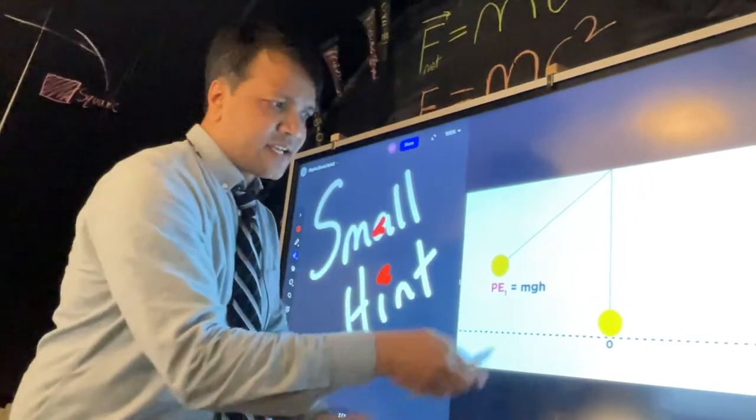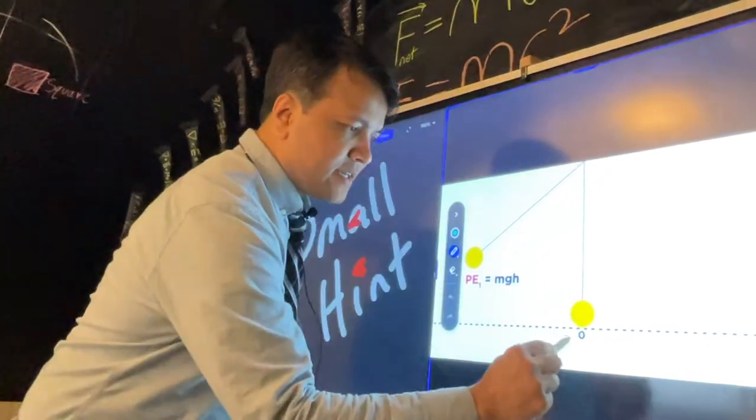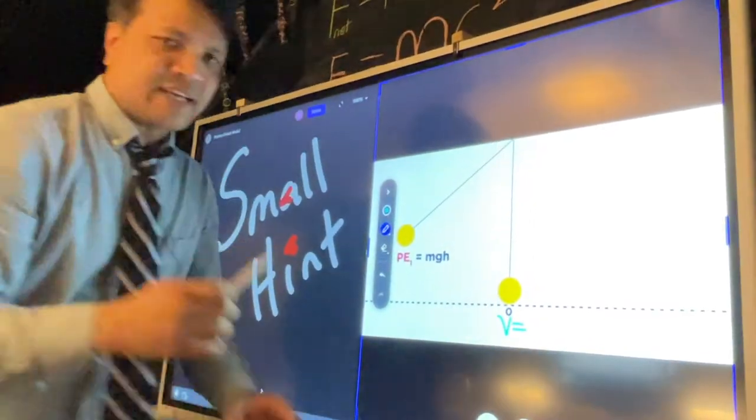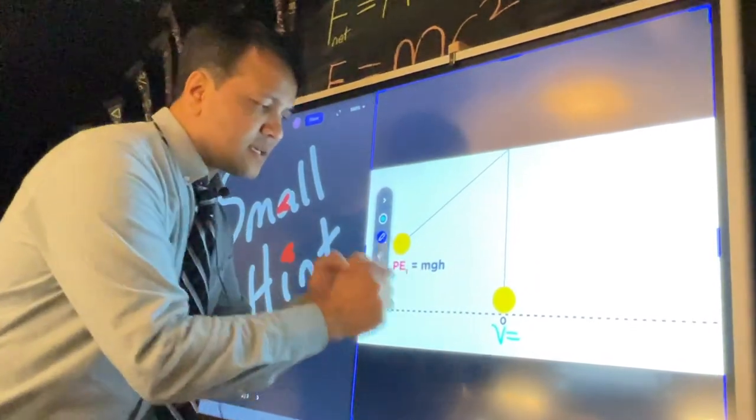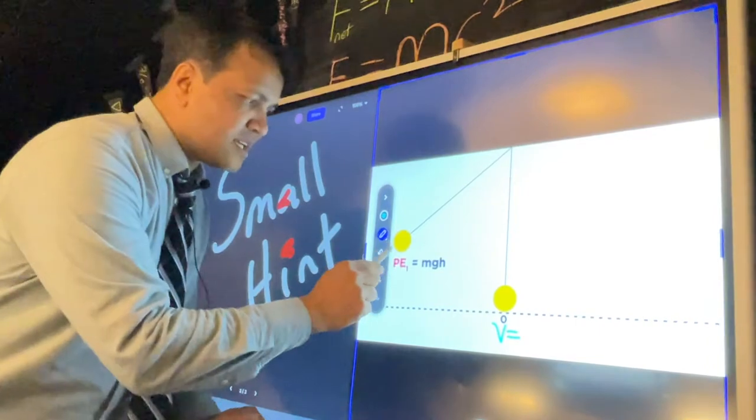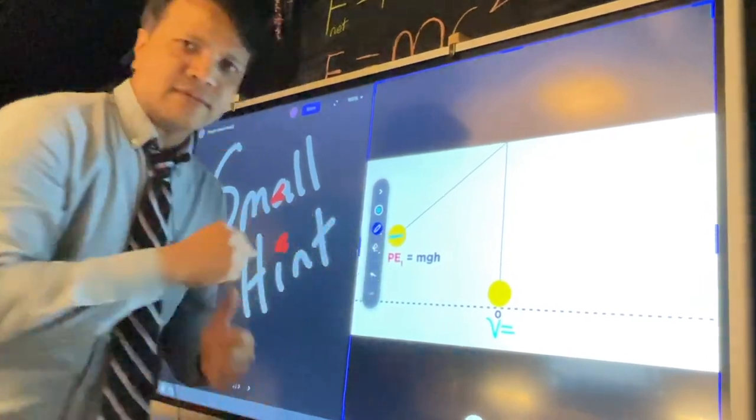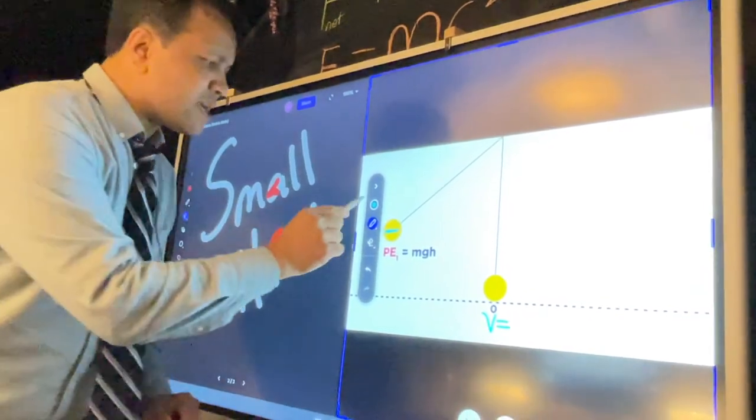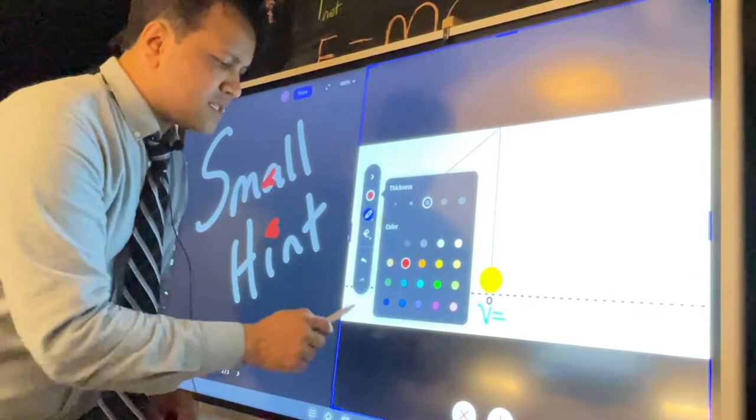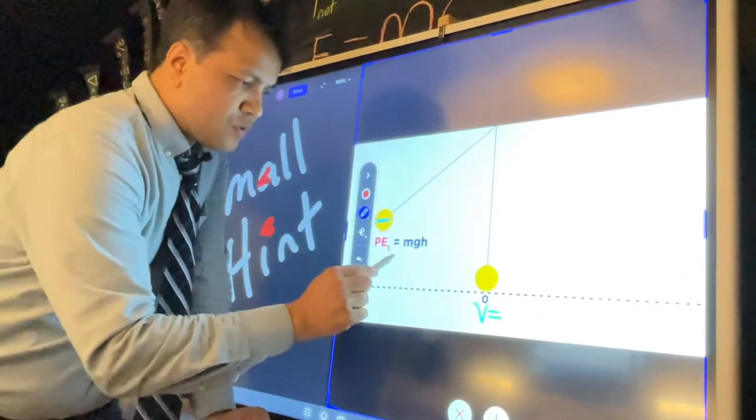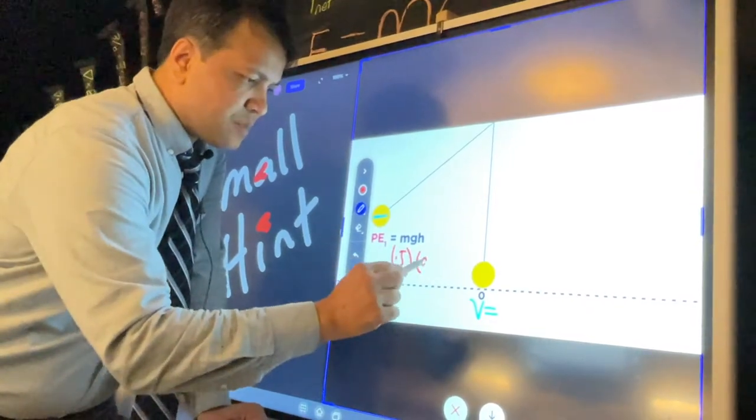In order to find the velocity right here, because the maximum velocity is right here, you need to find the potential energy, the gravitational potential energy at right here. Okay, so you have all the information to find the potential energy.